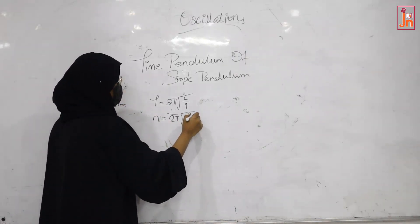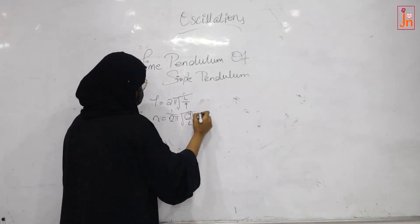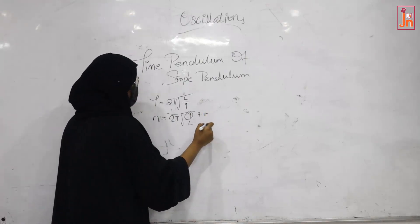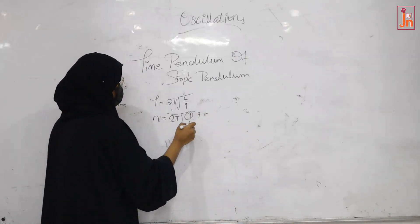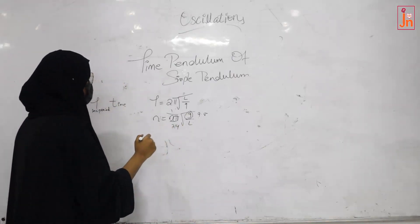Here, g is acceleration due to gravity, l is length. G's value fixed is 9.8, this can be approximately 10, and π's value is 3.14.